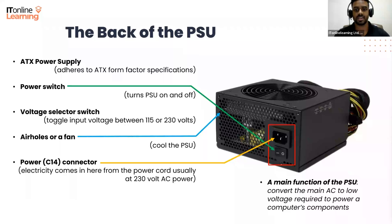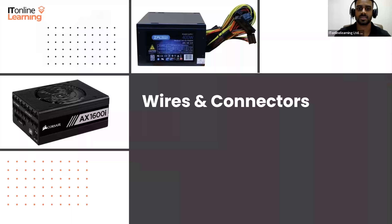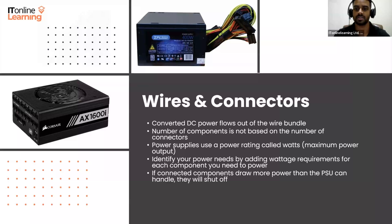The 230-volt AC power from the wall flows into the power supply where it's converted into three DC voltage levels: 12 volts, 5 volts, and 3.3 volts. This is because different components — such as the motherboard, CPU, and expansion cards — have different voltage requirements.